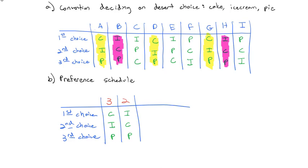Continuing down, then we see IPC. So IPC has also happened twice. And so for our last row, PCI, and we've got a preference schedule.